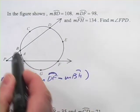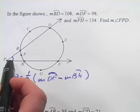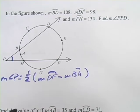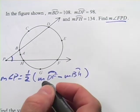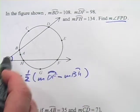So, big arc minus the little arc, half of that is that angle. That's the relationship that exists there. In this problem, we're being asked to find the measure of angle FPD. That is this angle, FPD.